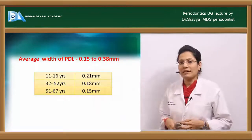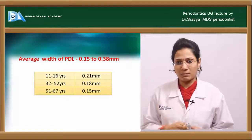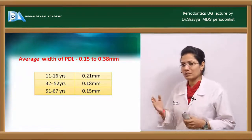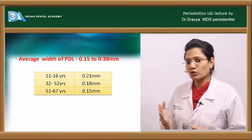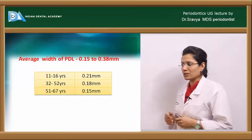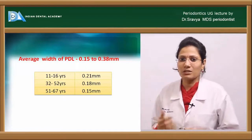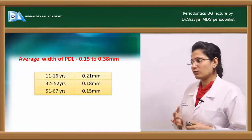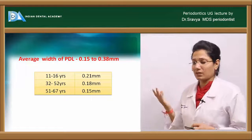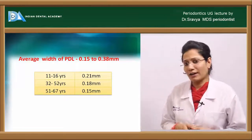The average width of PDL is about 0.15 to 0.38 millimeters and differs across age groups. In ages 11 to 16 years it is about 0.21 millimeters, in ages 32 to 52 years it is about 0.18 millimeters, and the least width is seen in the elderly age group of about 51 to 67 years with about 0.15 millimeters.